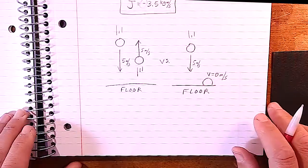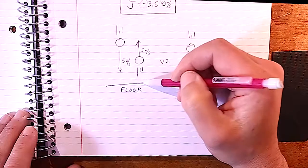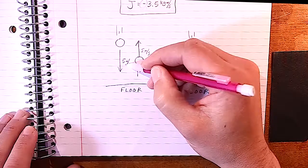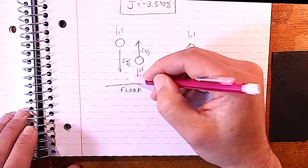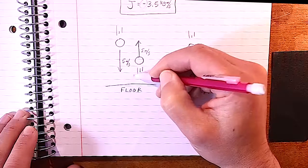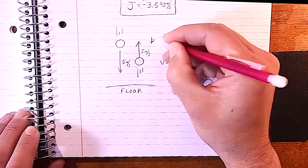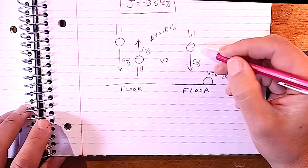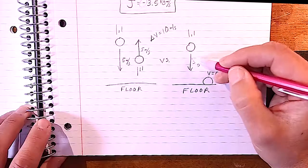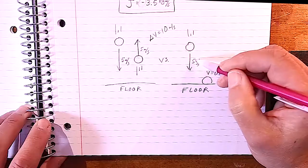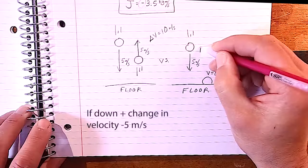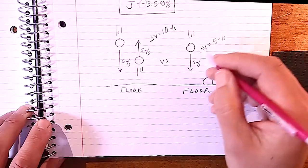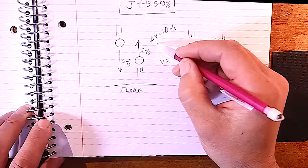Consider dropping a ball: it hits the floor and bounces up. It slows from 5 down to 0, then speeds back up to 5 — the change in velocity is 10. Compare that to a lump of clay that falls, hits the floor, and sticks: it goes from 5 to 0, so the change in velocity is only 5. The bouncing object has the greater change in velocity, and therefore the greater change in momentum.